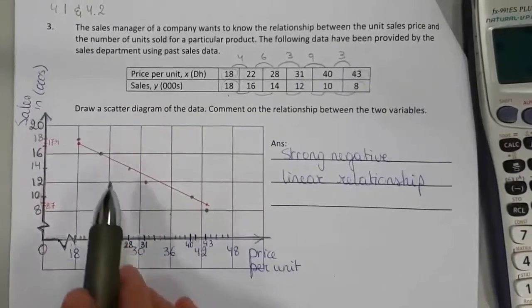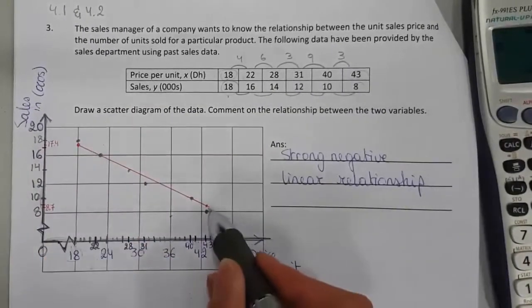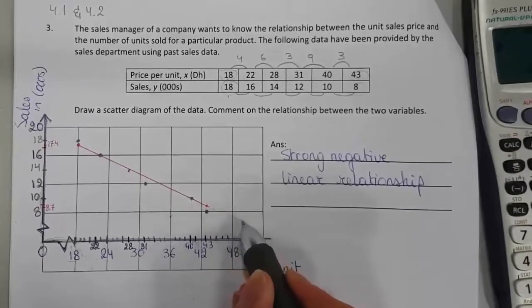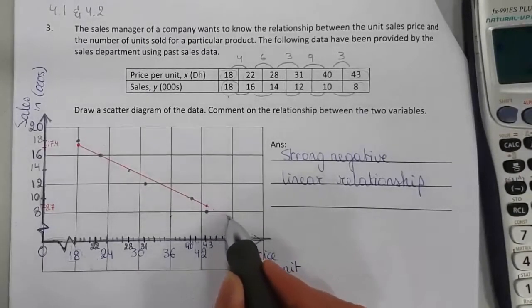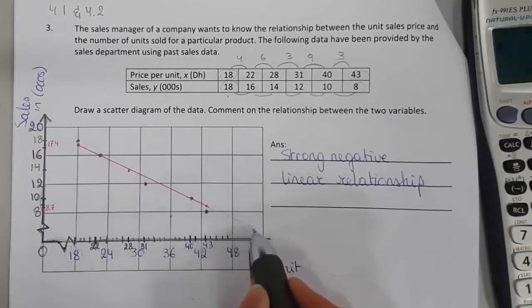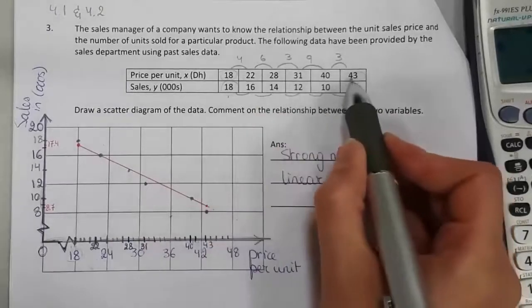One small remark. When we are drawing our line of regression, we do not draw the line further than the last point. Because we should really not be making predictions outside of our interval that was given between 18 and 43.